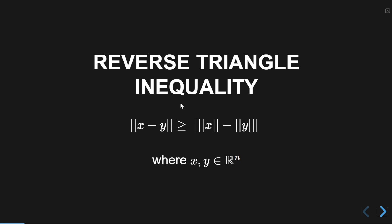We'll begin with the statement of the reverse triangle inequality. It's very similar in nature to the typical triangle inequality. Applying for vectors x and y in R^n, it says that the norm of the difference x minus y is at least the absolute value of the difference of the norms of x and y. In other words, the norm of the difference is at least the difference of the norms in absolute value, and that's always true no matter which vectors x and y you pick.